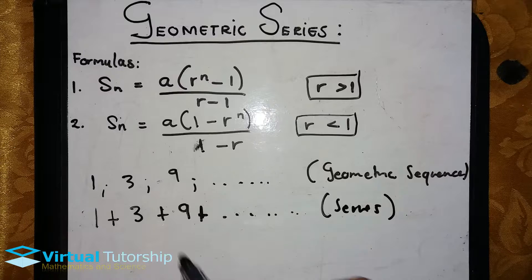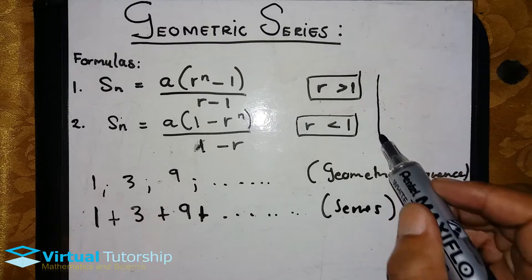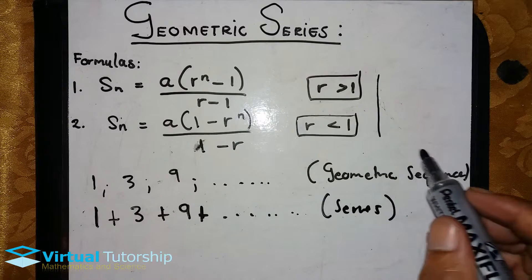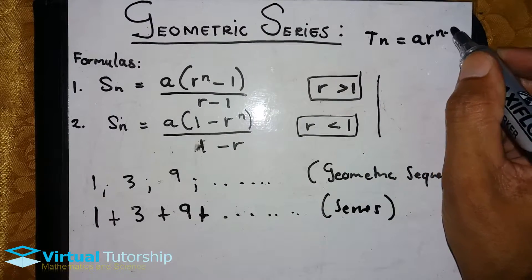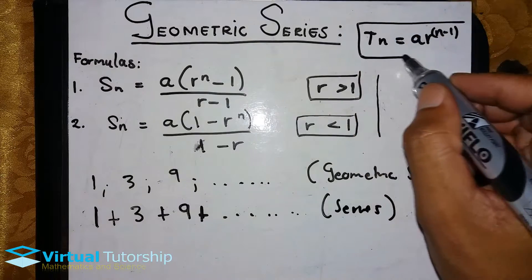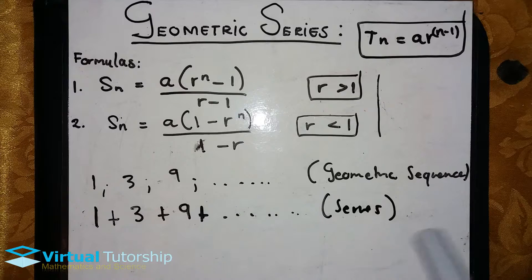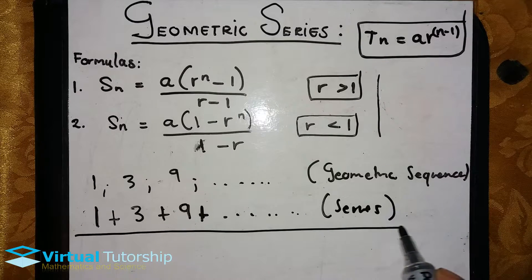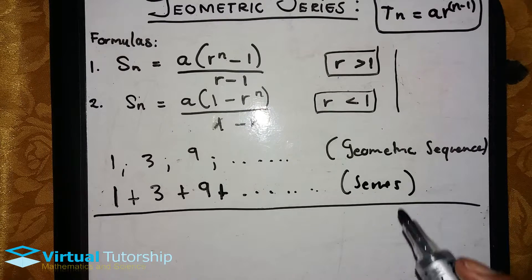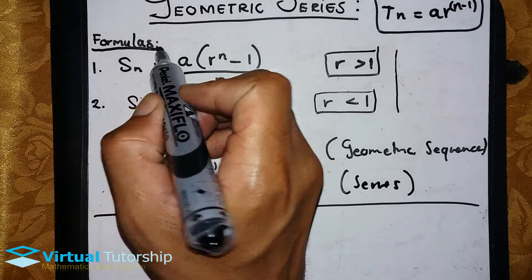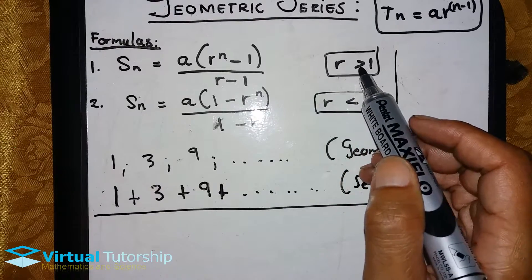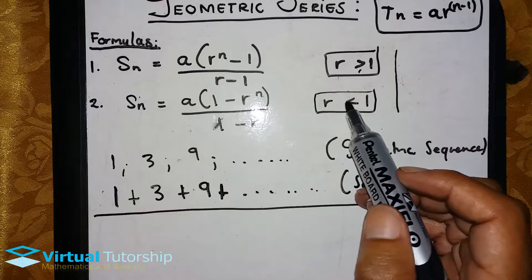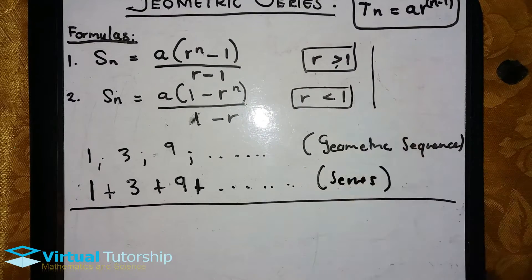So if you have a series, you have a formula. And if you have a sequence, you also have a formula: Tn is equal to A times r to the power n minus 1. This is the formula for a geometric sequence. Now for the geometric series, there are two formulas. The first one applies only if the geometric ratio r is greater than 1, and the second one applies only if r is less than 1.